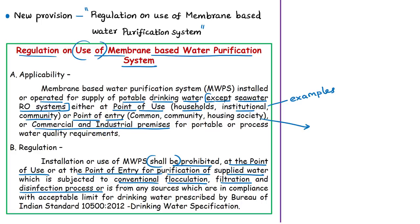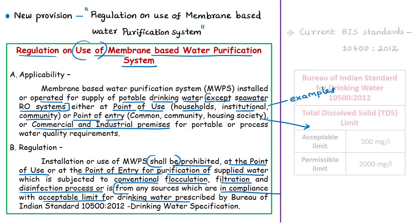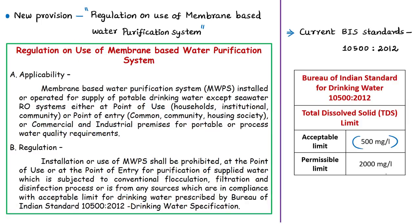Installation is also prohibited if the supplied water is from sources compliant with Bureau of Indian Standards acceptable limits for drinking water. The current acceptable TDS limit is 500 mg/L, while the permissible limit — applicable in the absence of an alternative source — is 2000 mg/L. Above the permissible limit, sources must be rejected. A notable variation exists between Indian standards and WHO water quality standards.